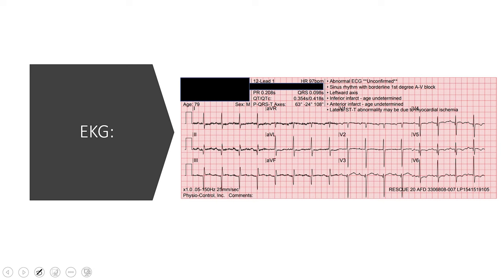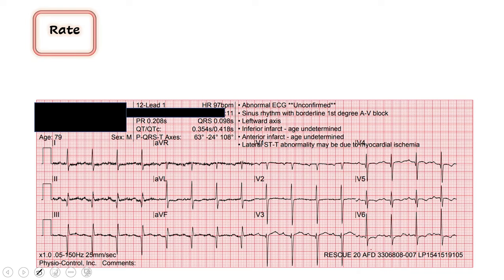I'll let you take a look at that for a second and come up with your own diagnosis, and then we'll go through it together. So as we start, same way every time, we look at our rate. Rate is 97. I'm going to just check with my thick red line and make sure that marches out. The QRS lines up on the thick red line — 300, 150, 100, just less than 100. I agree with the computer.